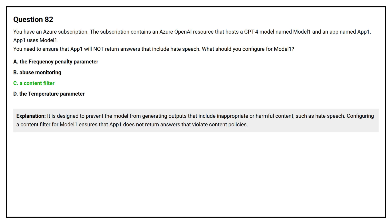A content filter is designed to prevent the model from generating outputs that include inappropriate or harmful content, such as hate speech. Configuring a content filter for Model1 ensures that App1 doesn't return answers that violate content policies.